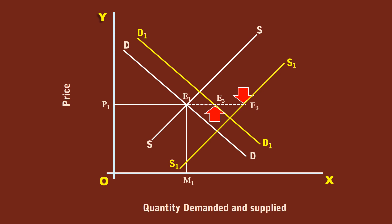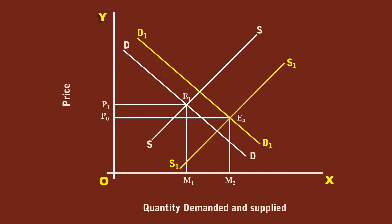The sellers compete with one another to sell more by offering the product at a lower price. They move down along the supply curve S1S1. As the price moves down, the buyers expand the demand by moving down along the demand curve D1D1. At last, a new equilibrium is reached at E4, where the new demand curve D1D1 cuts the supply curve S1S1. The new price is P0, which is less than P1. The new equilibrium quantity is M2, which is greater than M1. The net result is the price decreases from P1 to P0 and the quantity increases from M1 to M2. The impact of the increase in demand and supply is partly absorbed by price and partly by quantity.